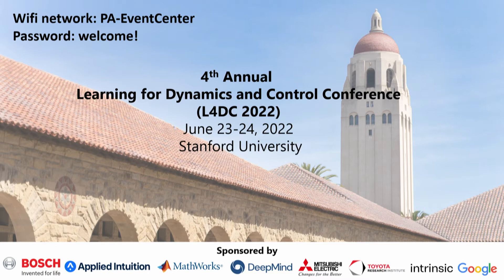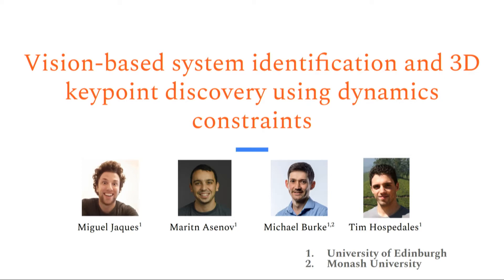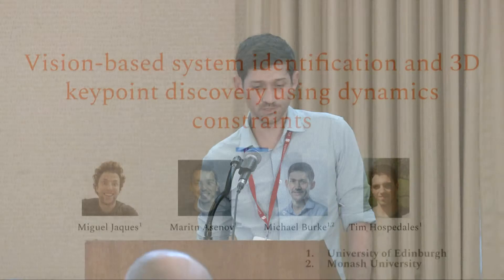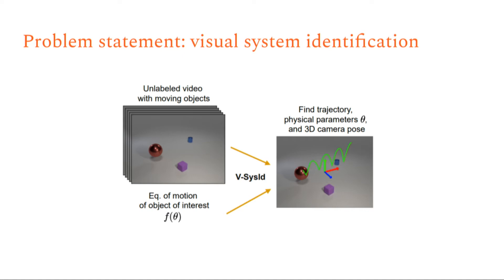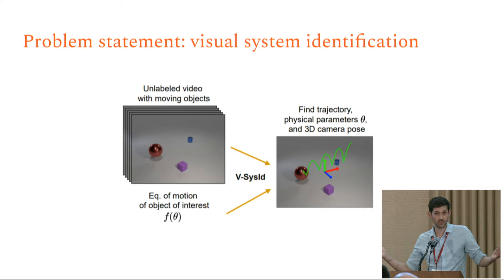Hi everyone, I'm Michael Burke from Monash University in Melbourne. This is work led by Miguel, who just completed his PhD. The problem I'm trying to solve is vision-based system identification: given a video with some known dynamics, I'd like to find the trajectory of an object of interest, the physical parameters governing the motion, and where my camera was when the video was taken.